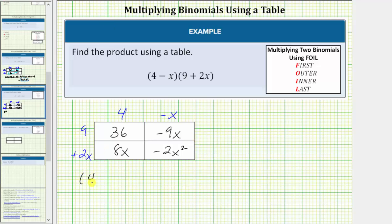So now we know the quantity 4 minus x times the quantity 9 plus 2x is equal to 36 plus 8x minus 9x minus 2x squared. Notice how the product simplifies, because we have two like terms here, which show up here in the table. 8x minus 9x is equal to negative 1x, or just negative x. So the product is equal to 36 minus x minus 2x squared.